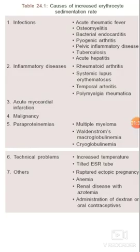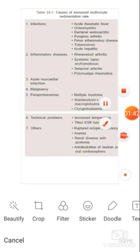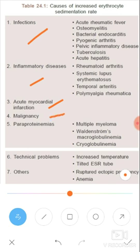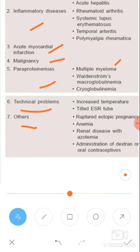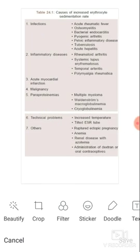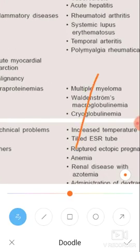Let us look at the causes of increased ESR. The main categories are: infections, inflammations, myocardial infarction, cancer or malignancy, paraproteinemias like multiple myeloma, technical/lab problems, and others including pregnancy, anemia, renal disease, and oral contraceptives.